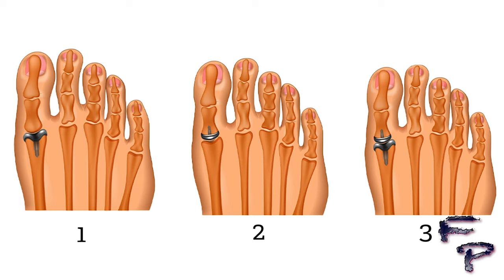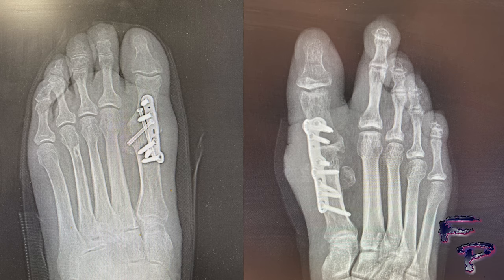I always take into account the patient's level of activity, their age, and what they do for a living in order to help them decide on treatment. In this case, an arthrodesis can be performed. I usually use plate and screw fixation. Sometimes I use an additional bone graft if the first ray appears too short compared to the lesser metatarsal parabola, and sometimes I also use cross-screws.